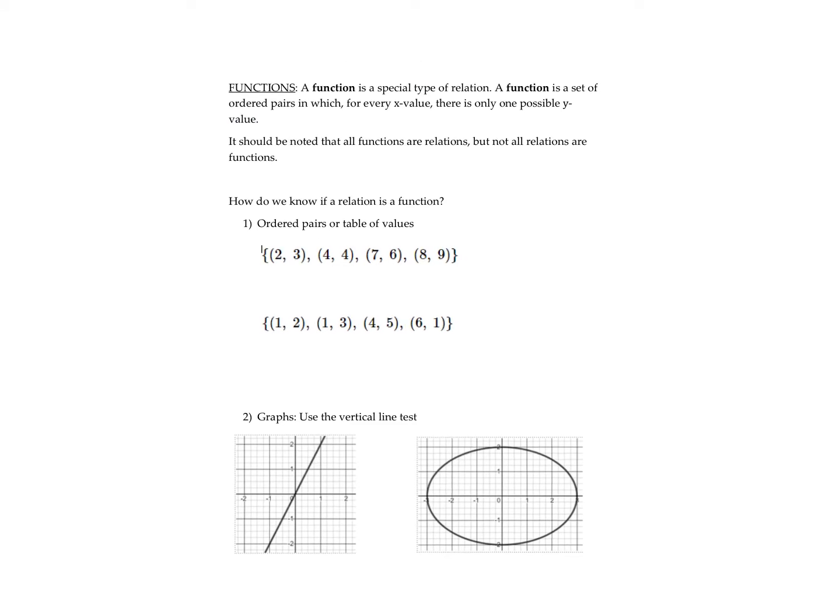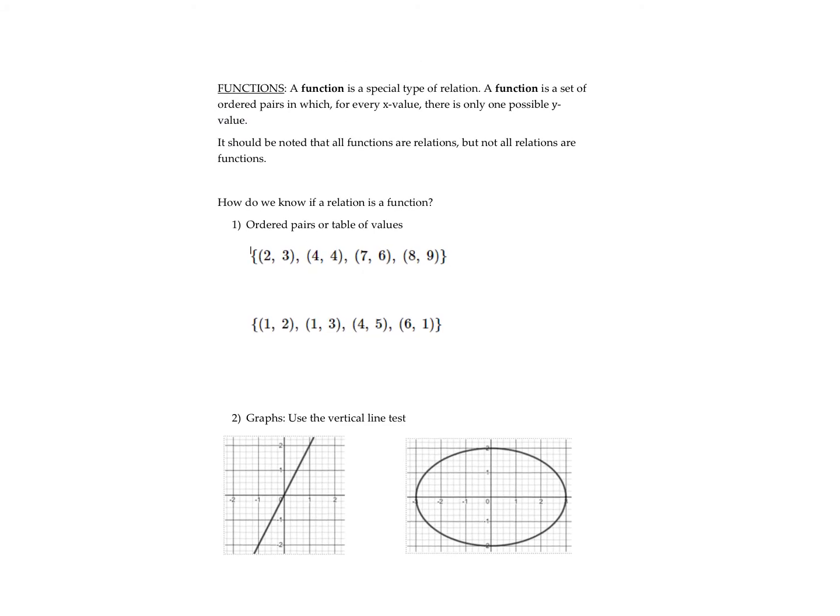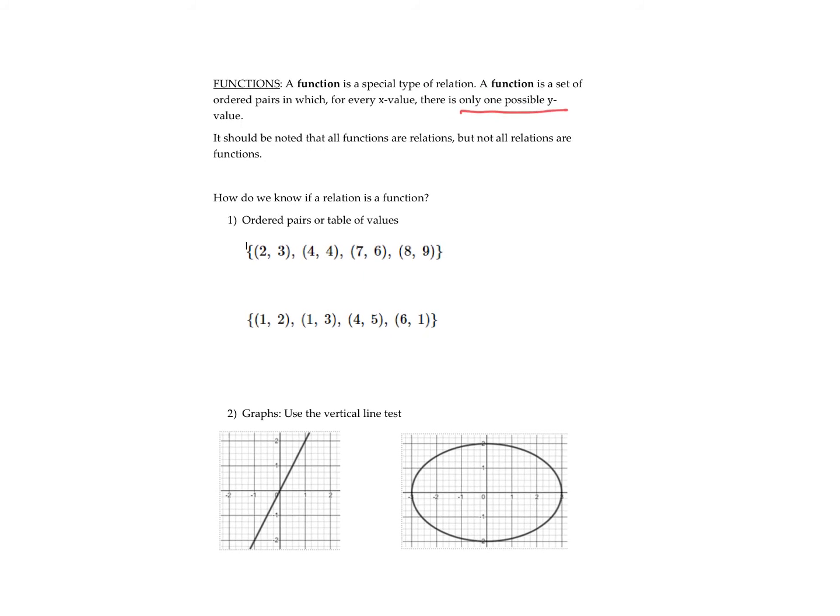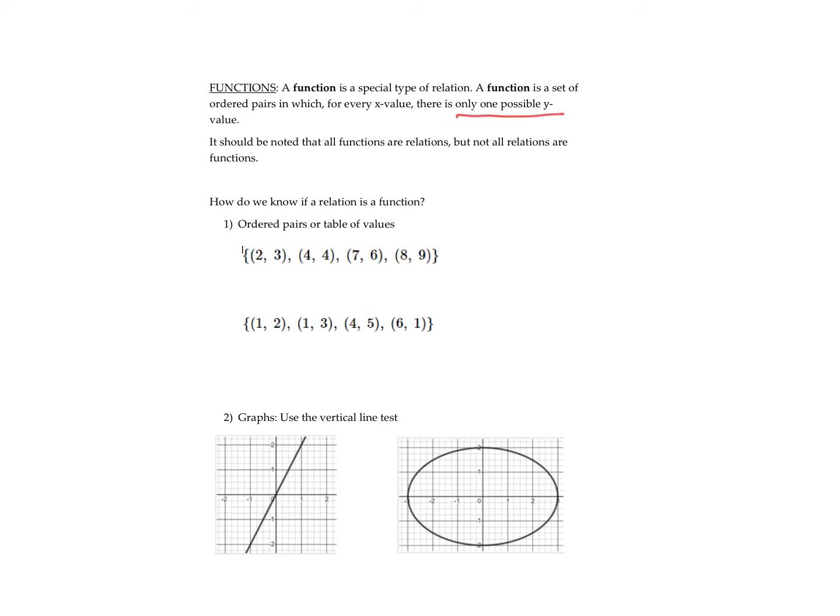A function is a specific type of relation. So a function is a set of ordered pairs for which every x value only has one y value. It should be noted that all functions are relations, but not all relations are functions. Functions are a specific type of relation. They have to have this criteria that every x value only has one y value.